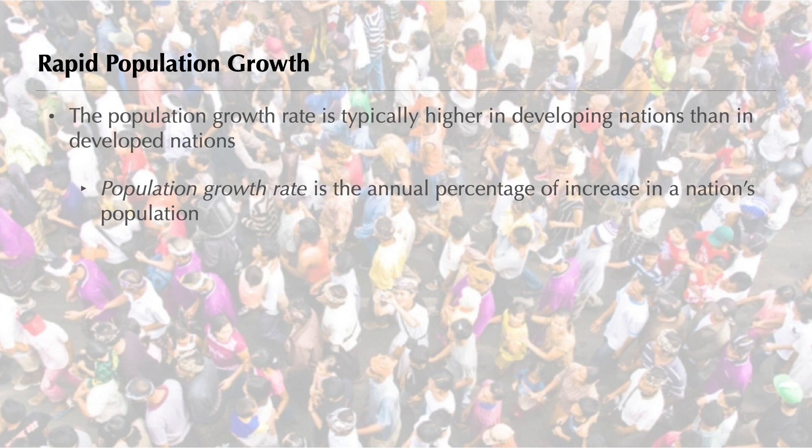Some experts argue that many statistics downplay population expansion in developed countries. The United States, for example, increases by more than 2.6 million people each year. About one-third of this increase is the result of immigration, but the United States has one of the highest birth rates among developed nations.